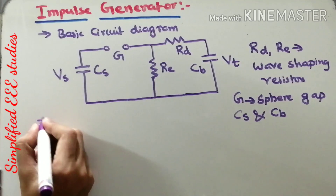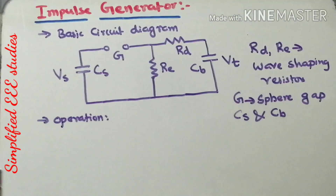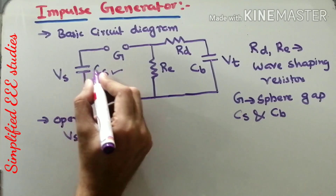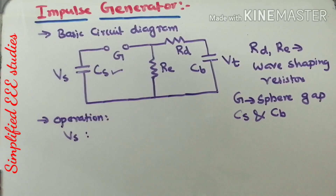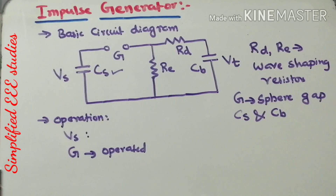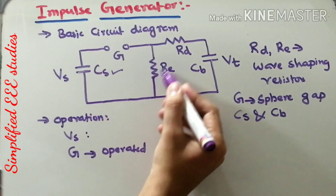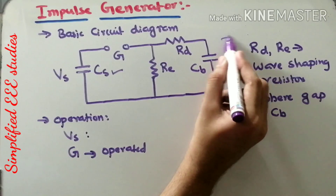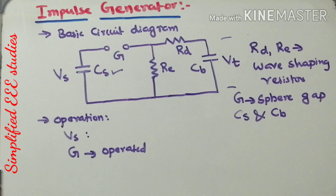Let us see how it operates. The impulse generator mainly works based on the charging and discharging action of a capacitor — specifically the charging and discharging action of capacitor CS. First, you need to apply input voltage Vs. Whenever Vs is actually reaching its peak value, the sphere gap becomes conductive — that means the sphere gap is getting operated. Once the sphere gap operates, the charge stored in the capacitor discharges through the output circuit. You will be getting the impulse voltage across capacitor CB. That means it is all about charging and discharging action.